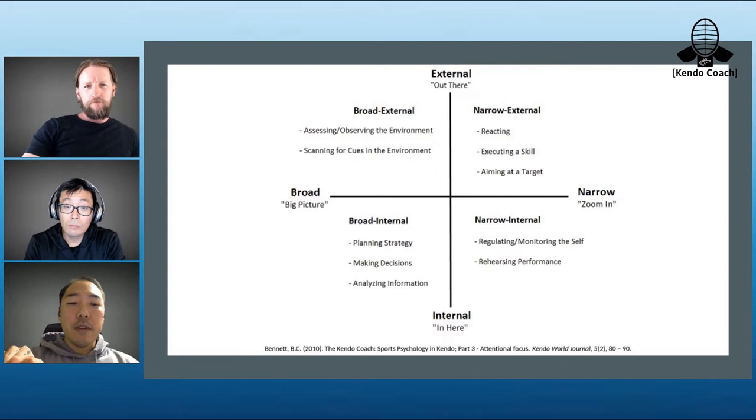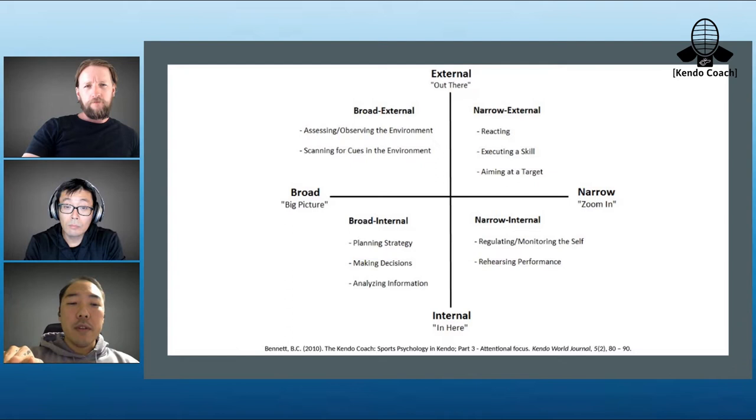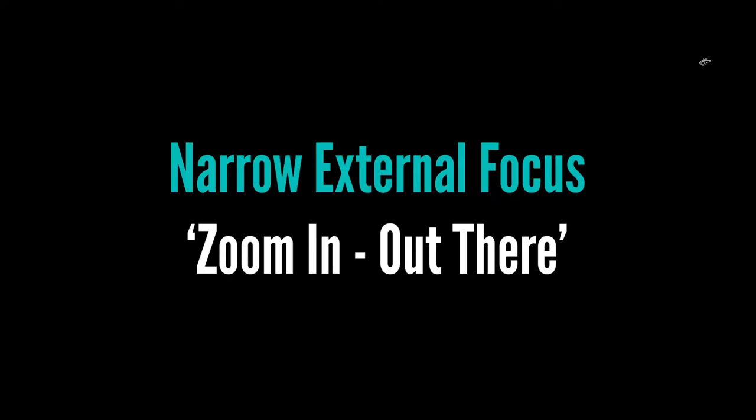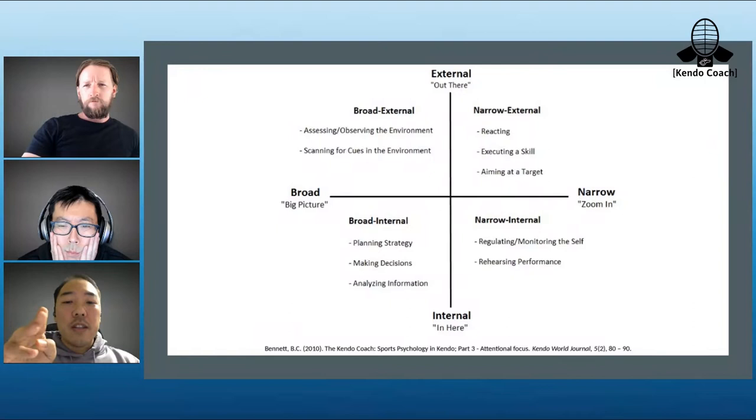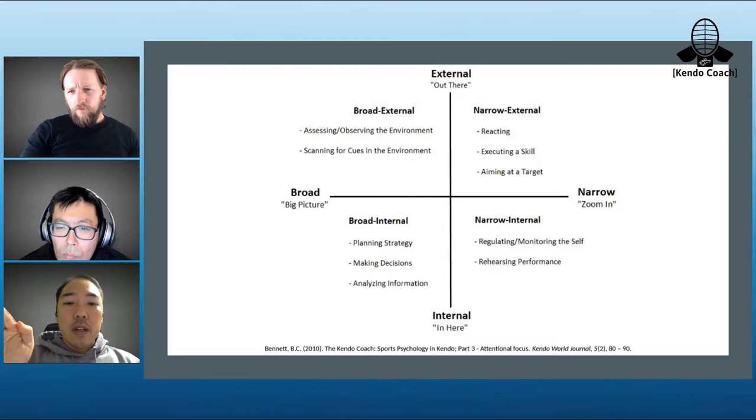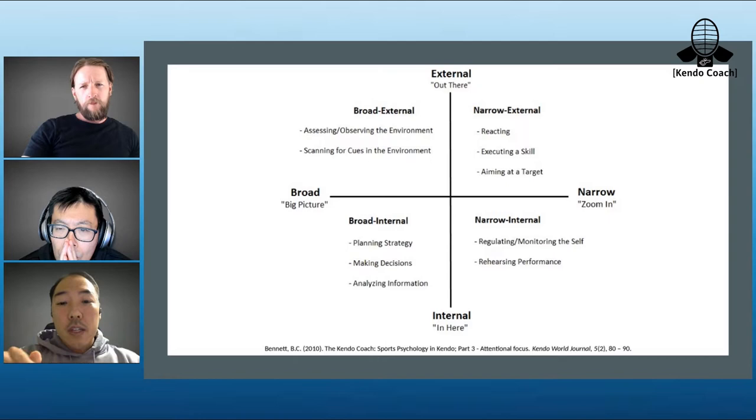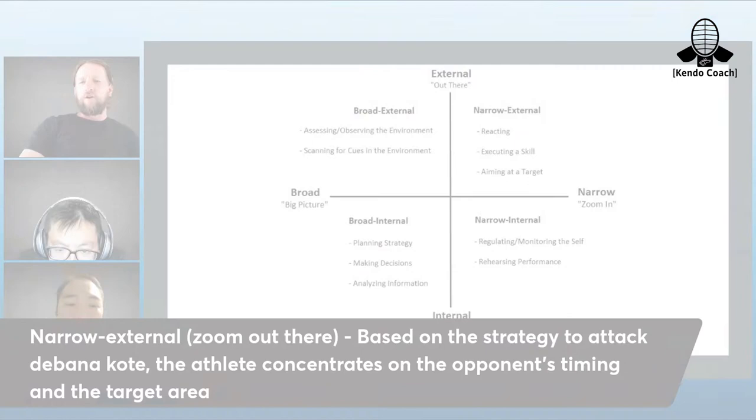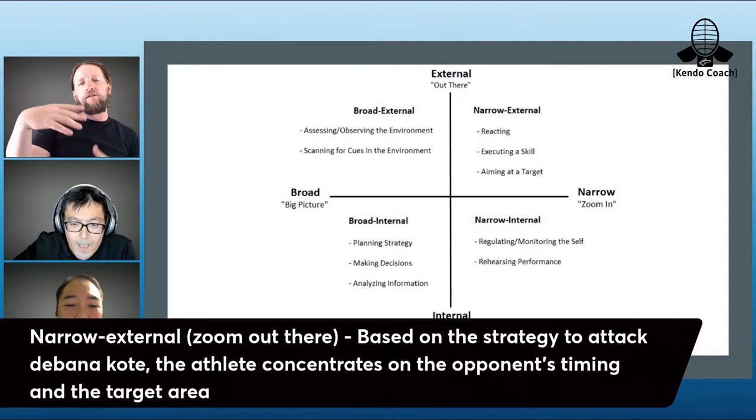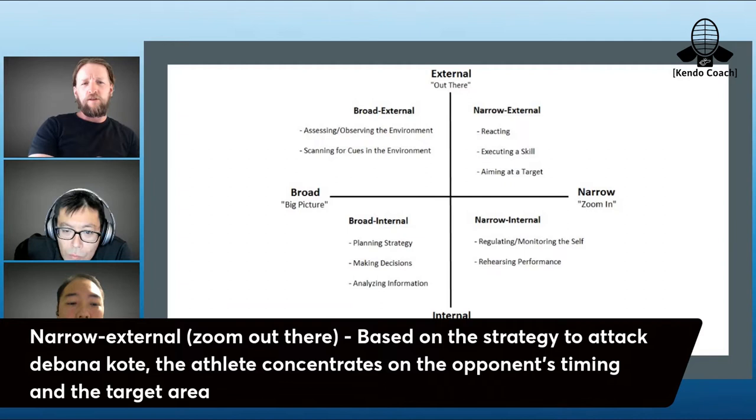External narrow is the best area for performance. Our attention goes outside from the body and the target is very narrow. It's reacting or executing a skill or aiming at a target - zooming in on what's going on out there. That might be your strategy, like for example striking the banakote when the person dips just before they strike, or focusing on their timing.